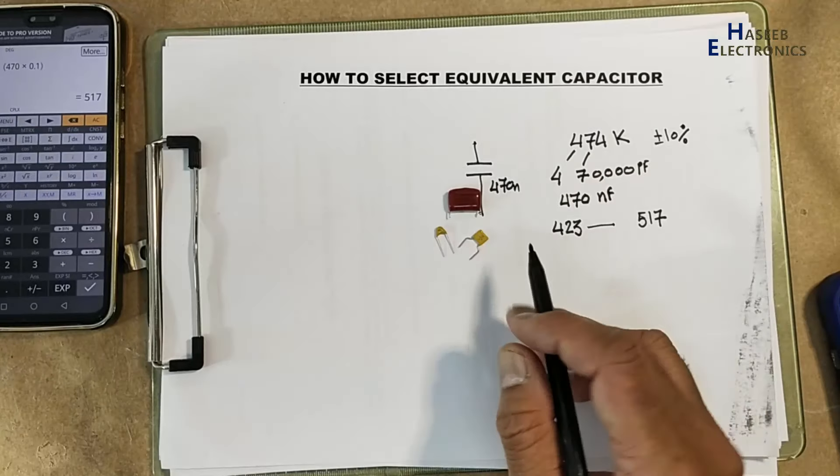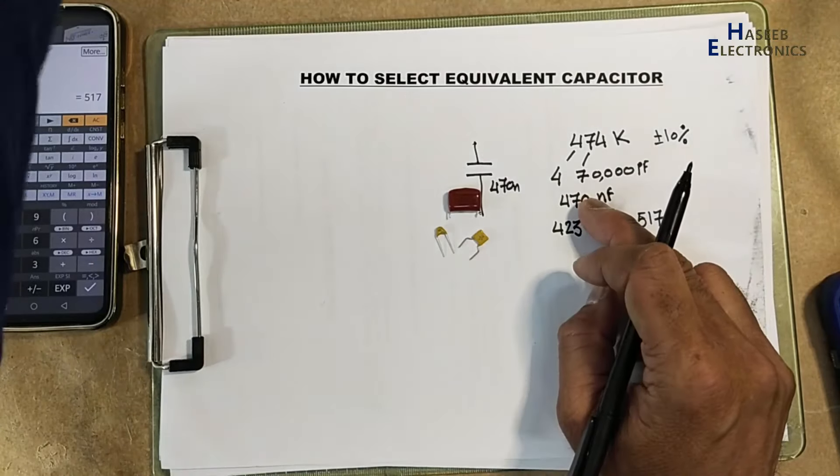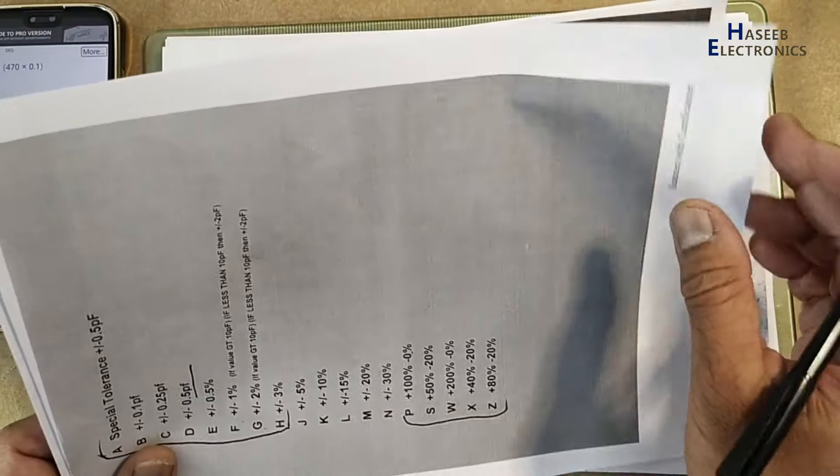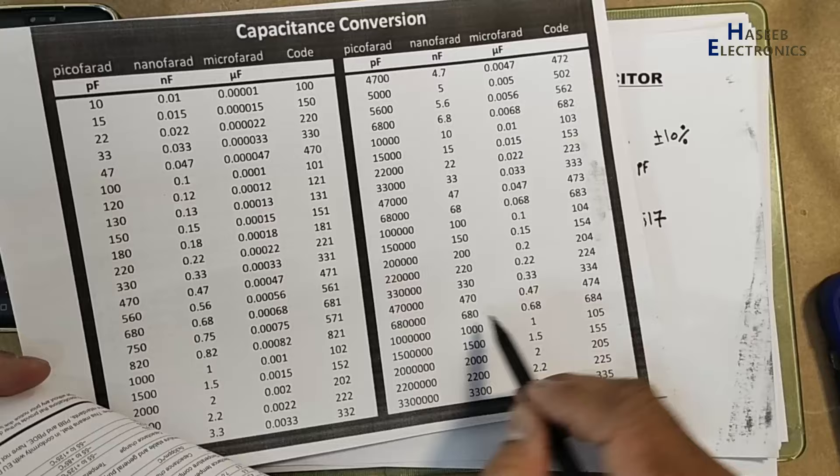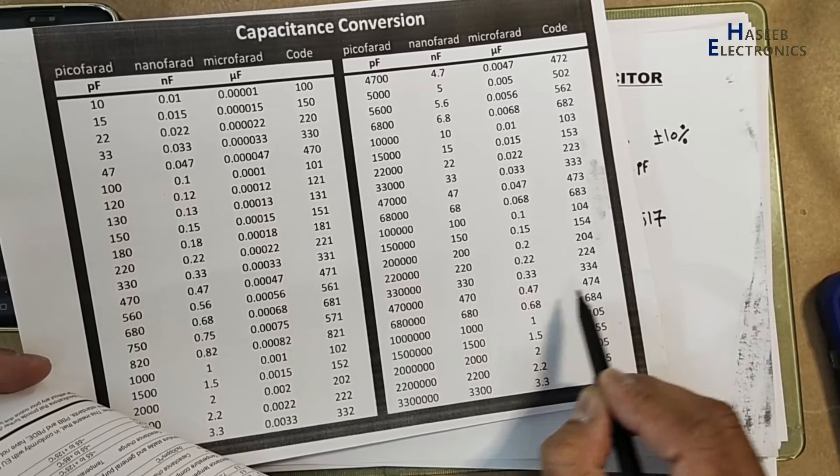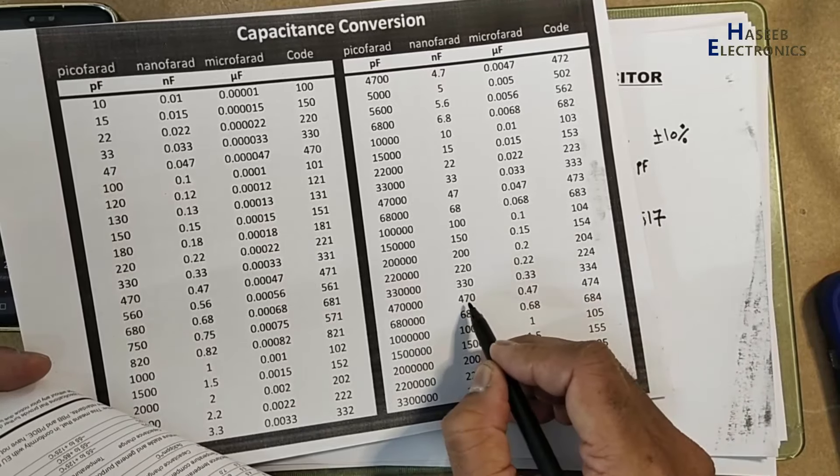470 nano. If we cannot find this one, then we can go to standard capacitance chart. This is 474 PF code. It is 470 nano.